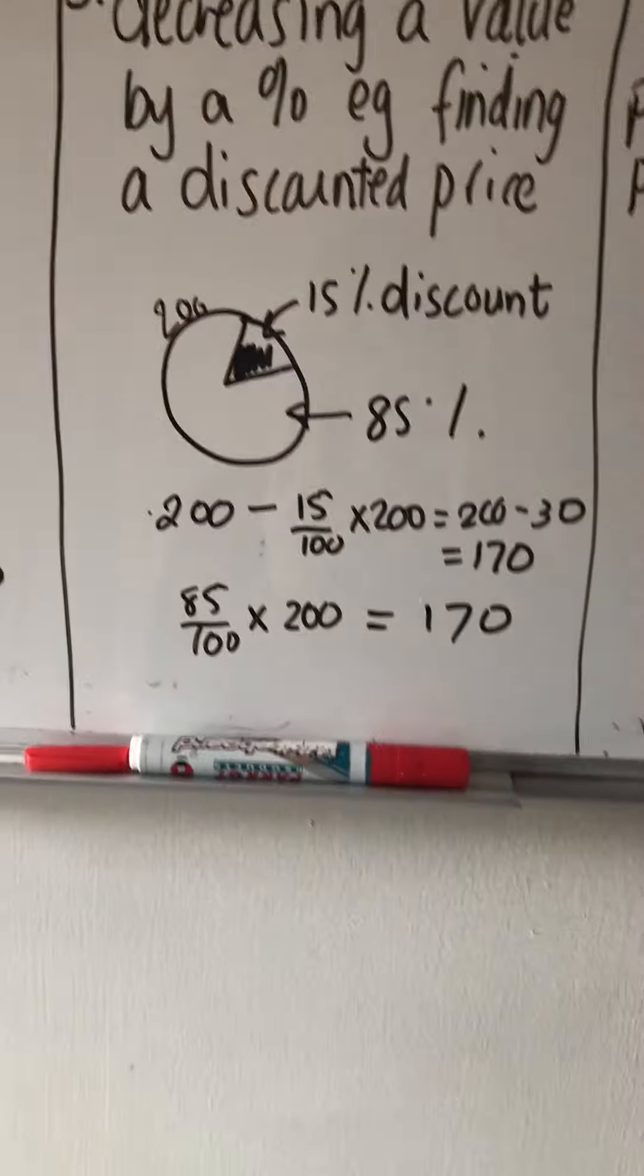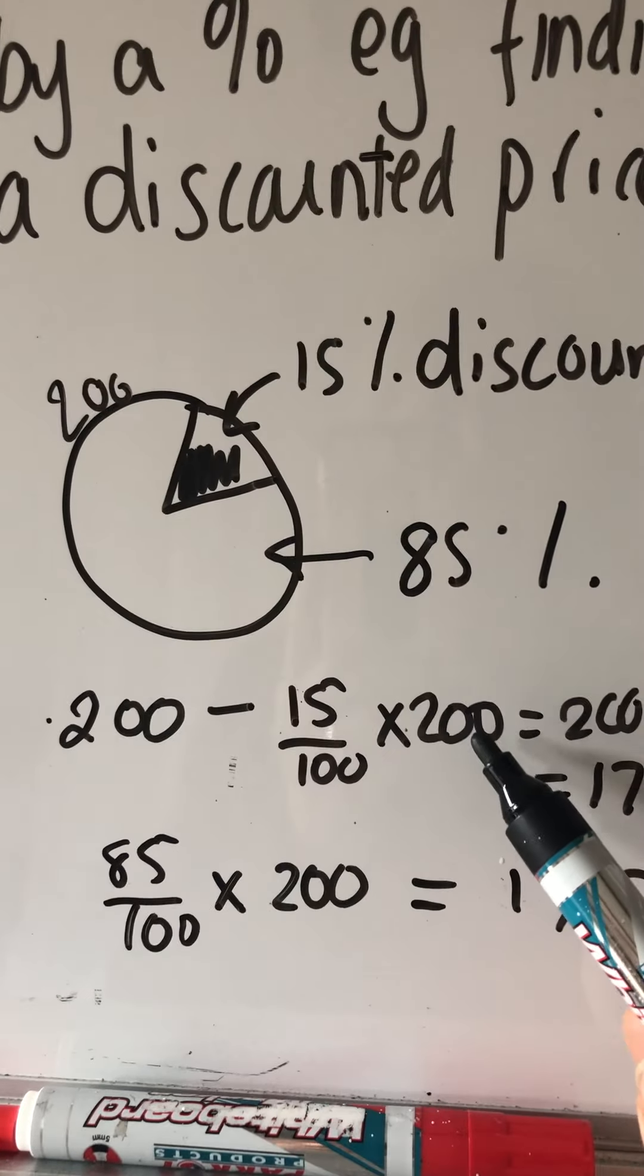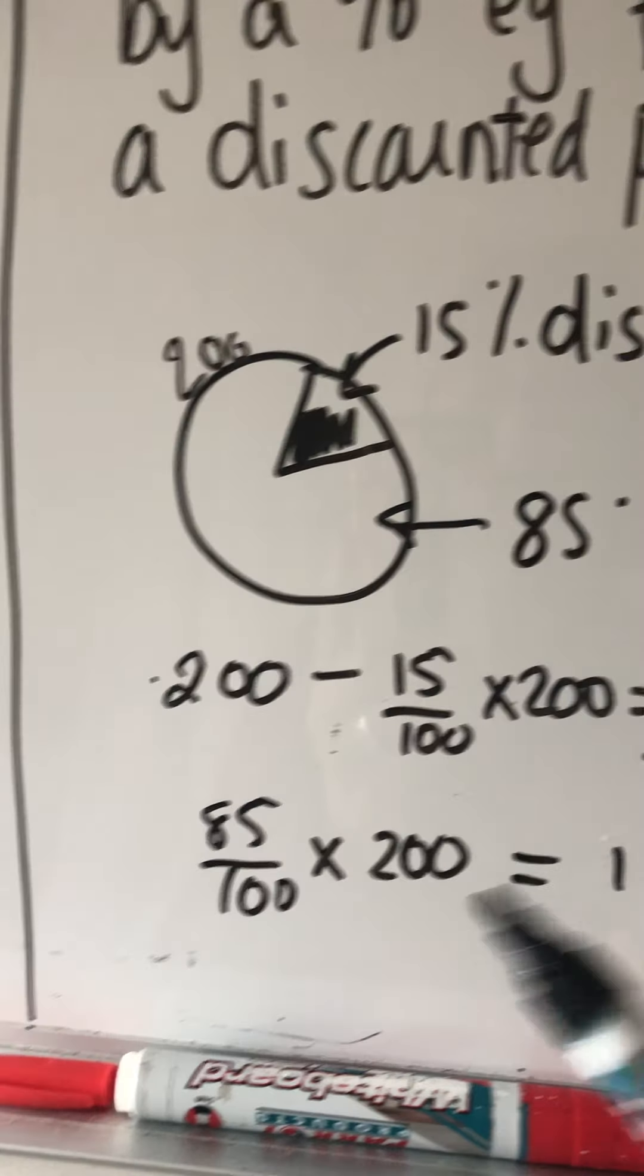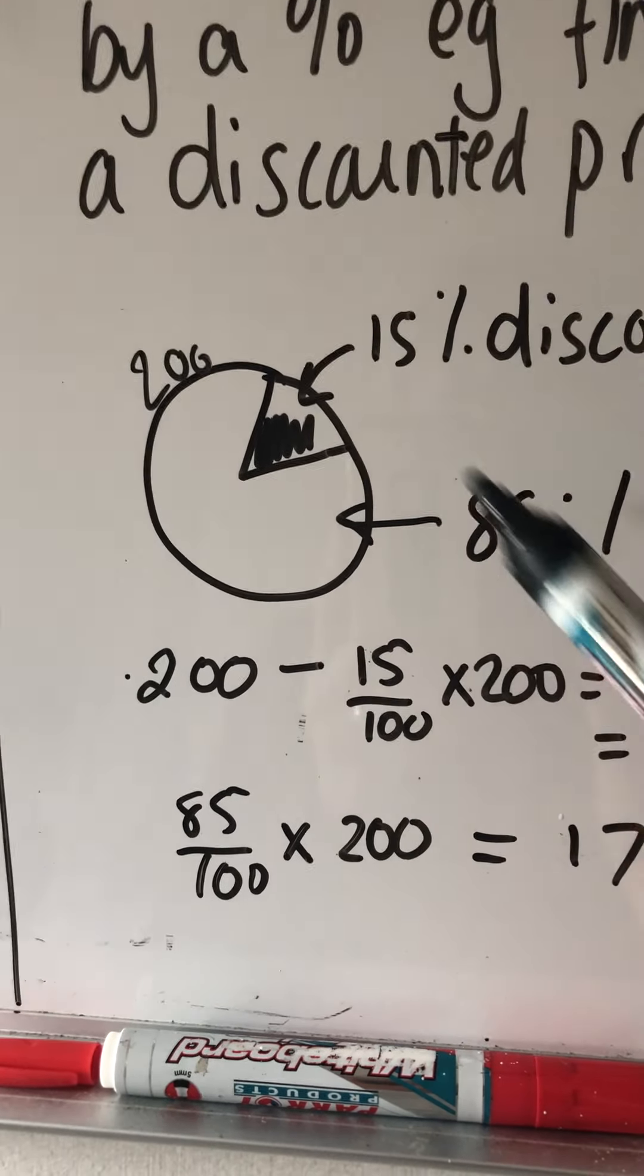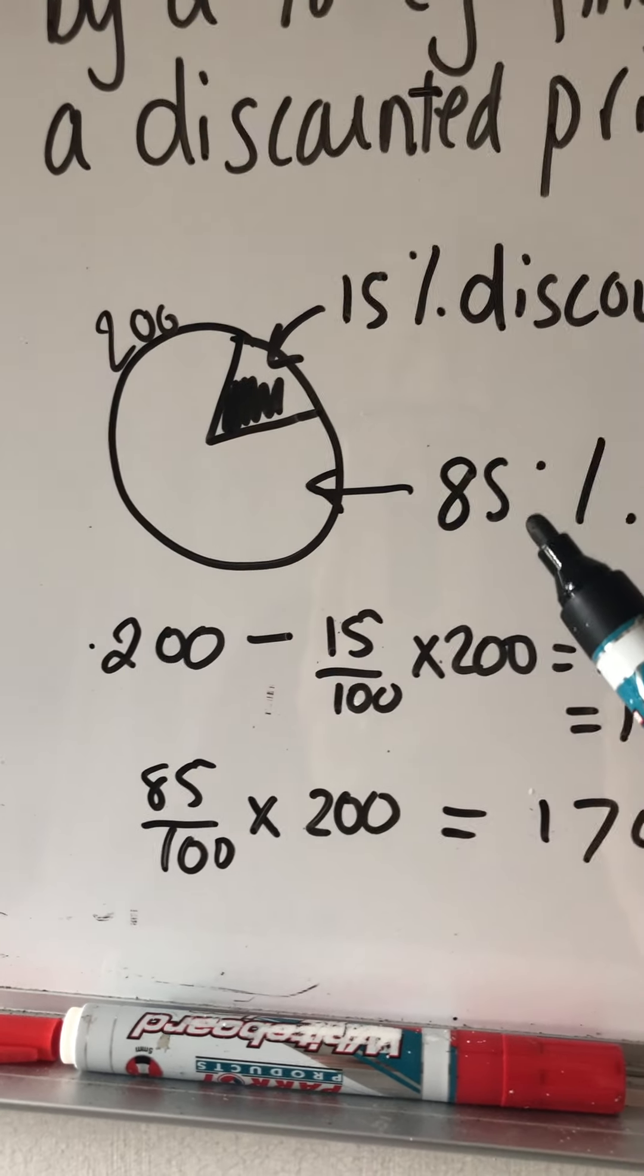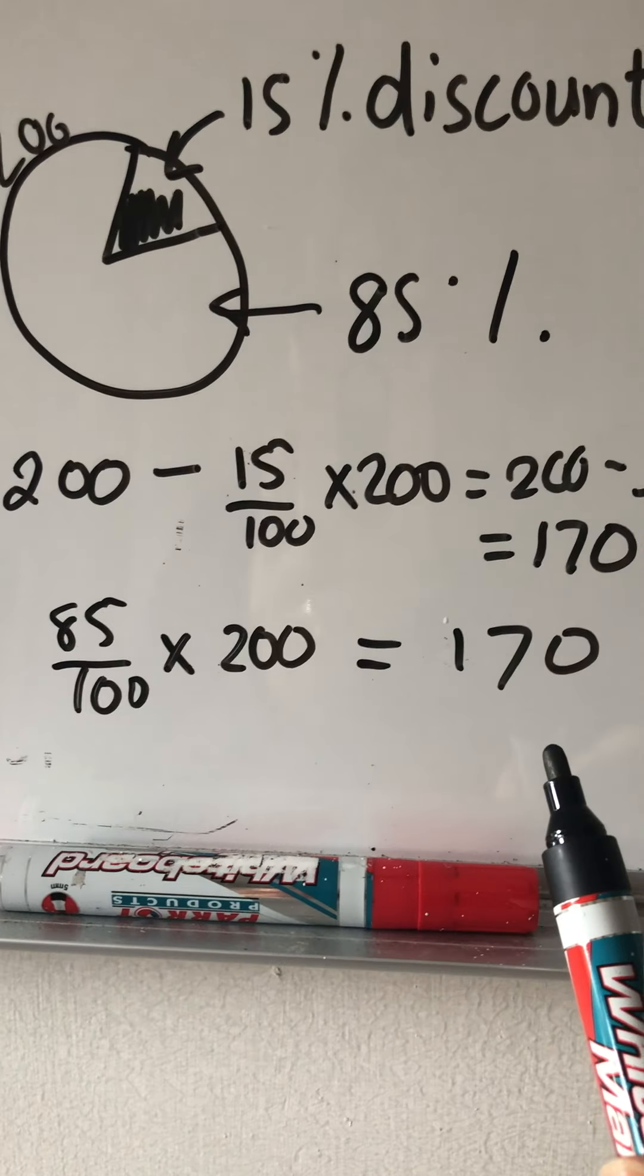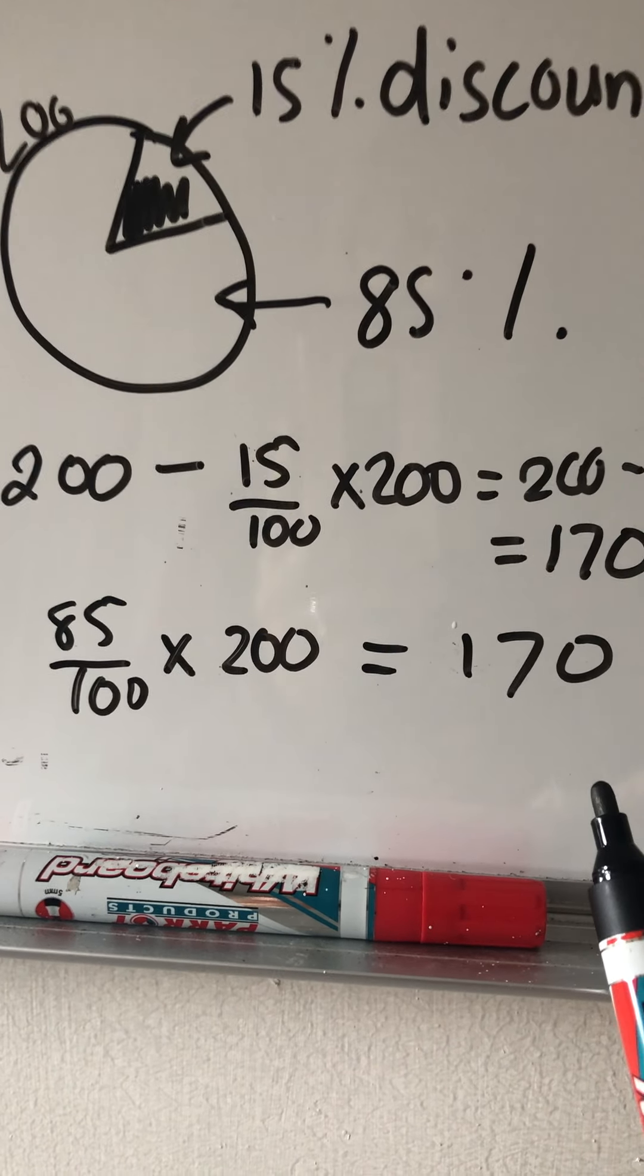So that was far faster. There were less calculations, because here we did this calculation and then subtracted to get the answer. Here, this calculation was far easier, often done in our head, but just backed up with 100 minus 15 is 85, and go straight to here. Much faster and easier.